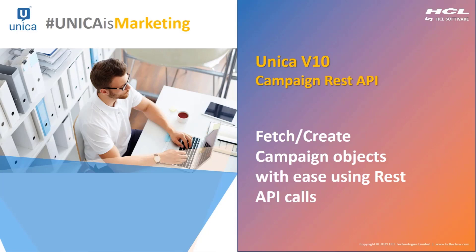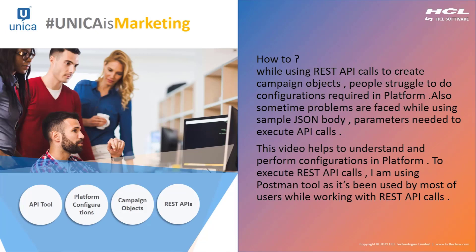In this video, we will discuss how configurations need to be performed in the platform to use v1 and v2 API calls. Also we will demonstrate an example of how APIs are executed using the Postman tool with one of the get offer API calls. I observed that while using REST API calls to create campaign objects, people struggle with the configurations required in the platform. The challenges can vary — like using the sample JSON body, the parameters, the URL which we need to pass, how to execute the API calls, or even updating the configuration values for any version of the REST API calls. In this video, we will discuss this problem statement.